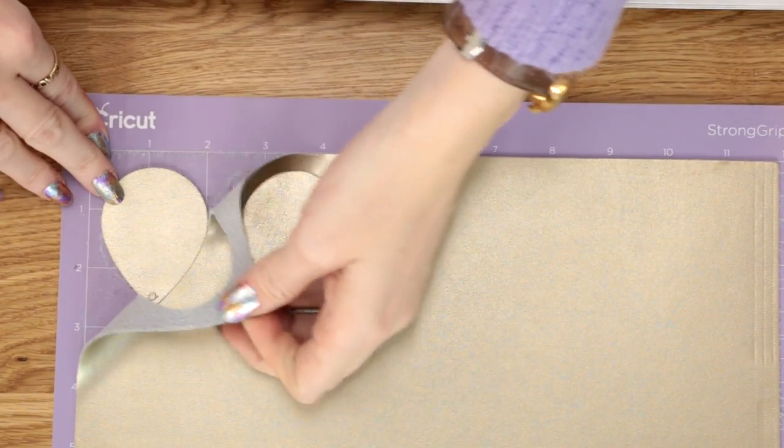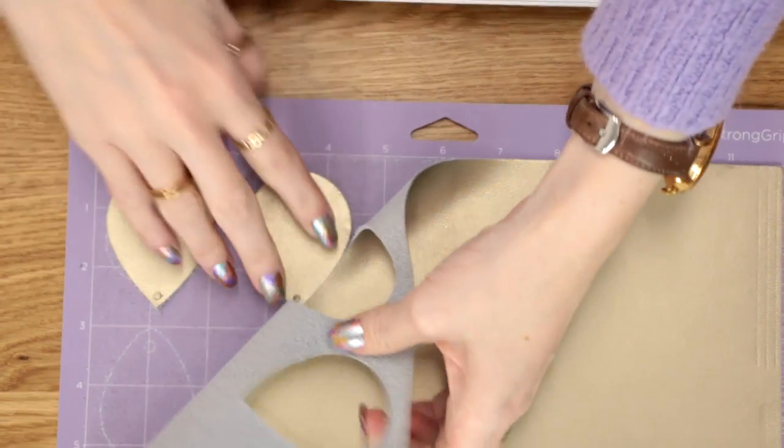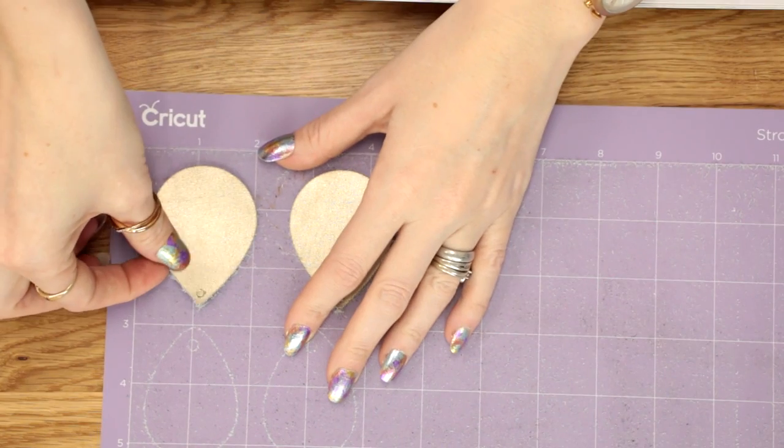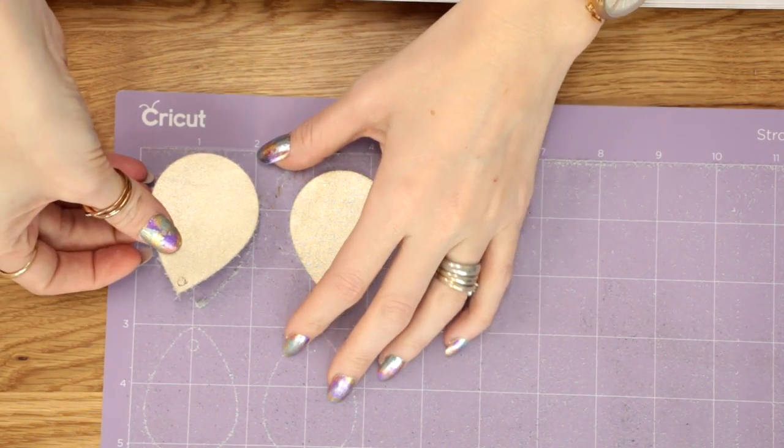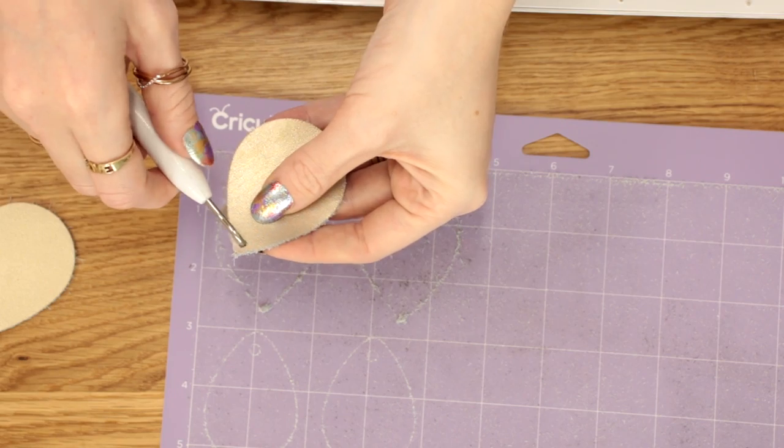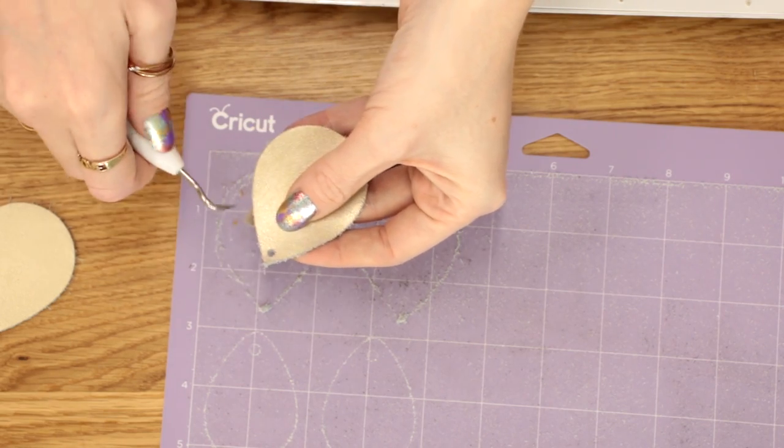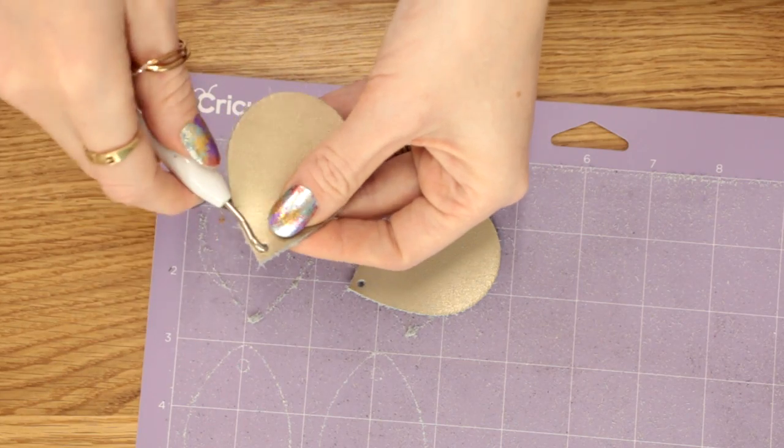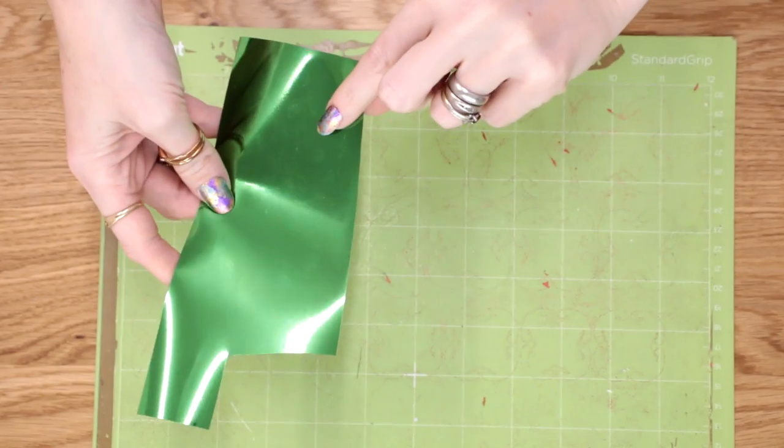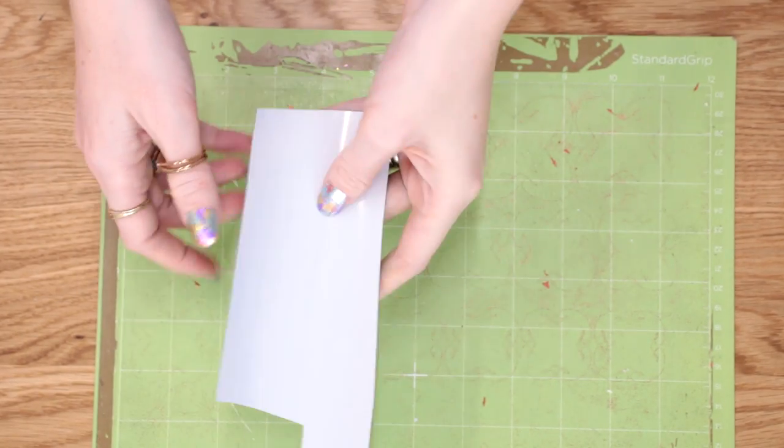We can then come in and peel the rest of the metallic leather away. We can remove the earrings. I then like to use a weeding tool just to poke through and remove that hole. We can then get the foil iron-on. As always, you're going to turn it so it's shiny side down and place it on the mat.